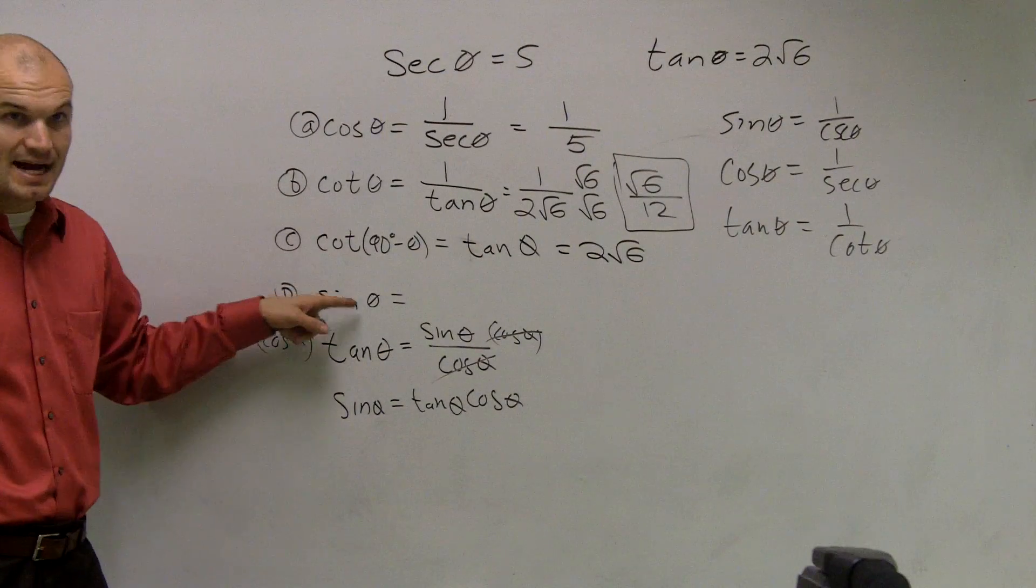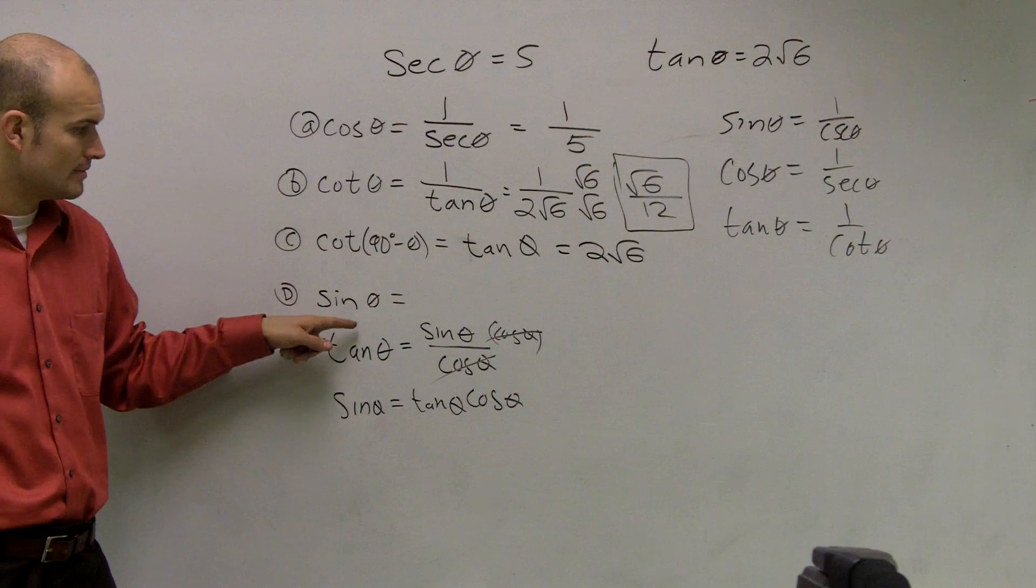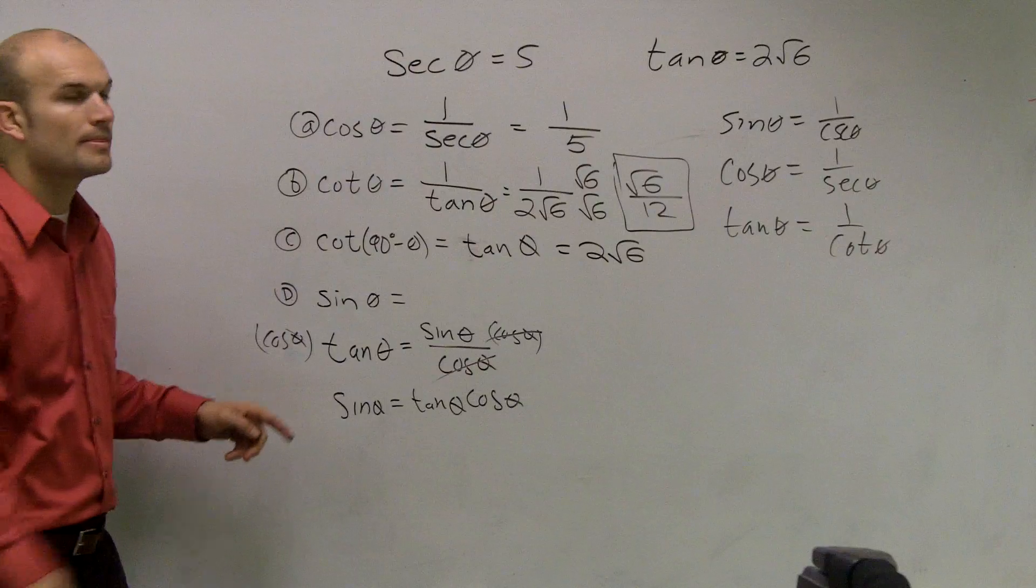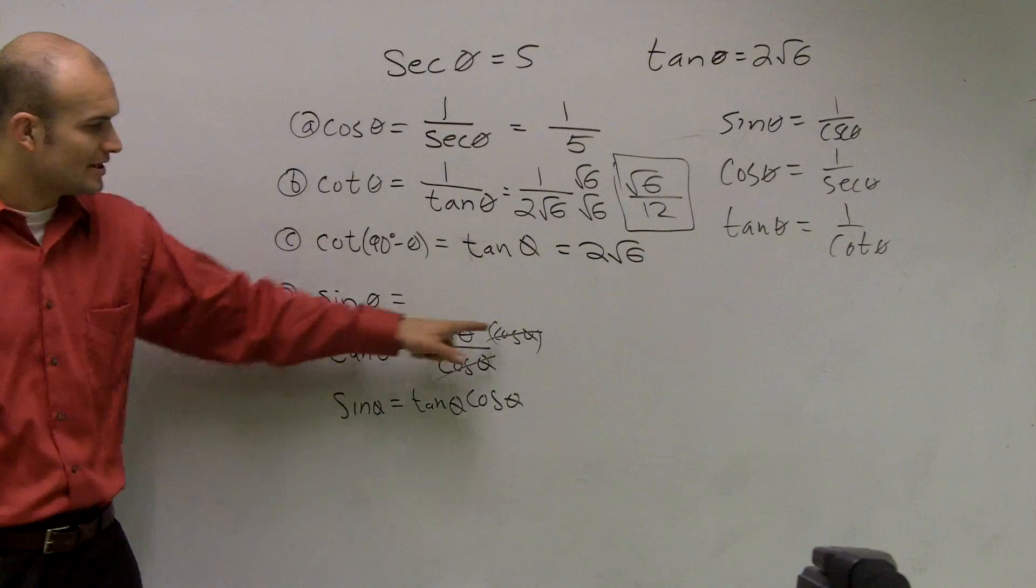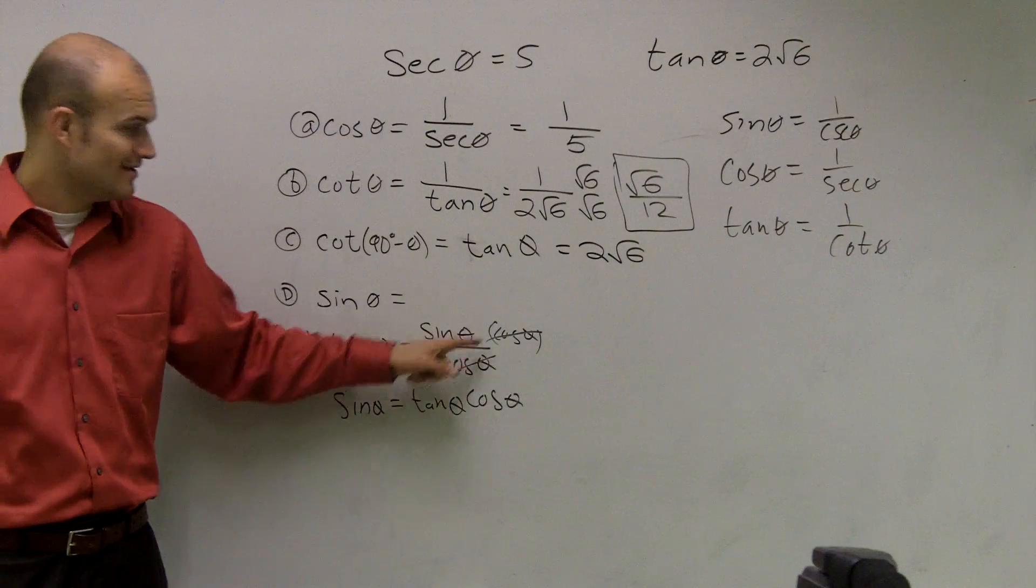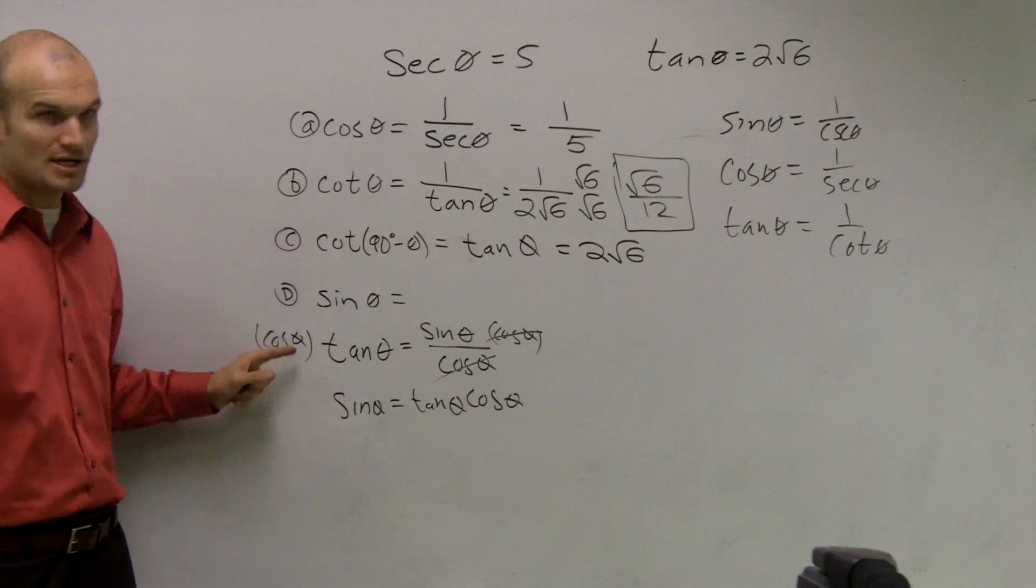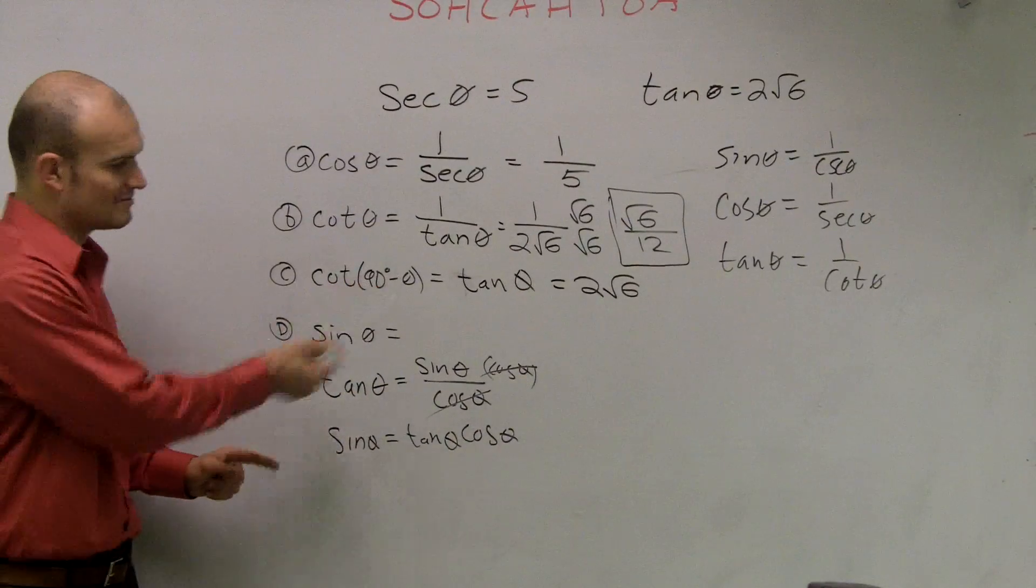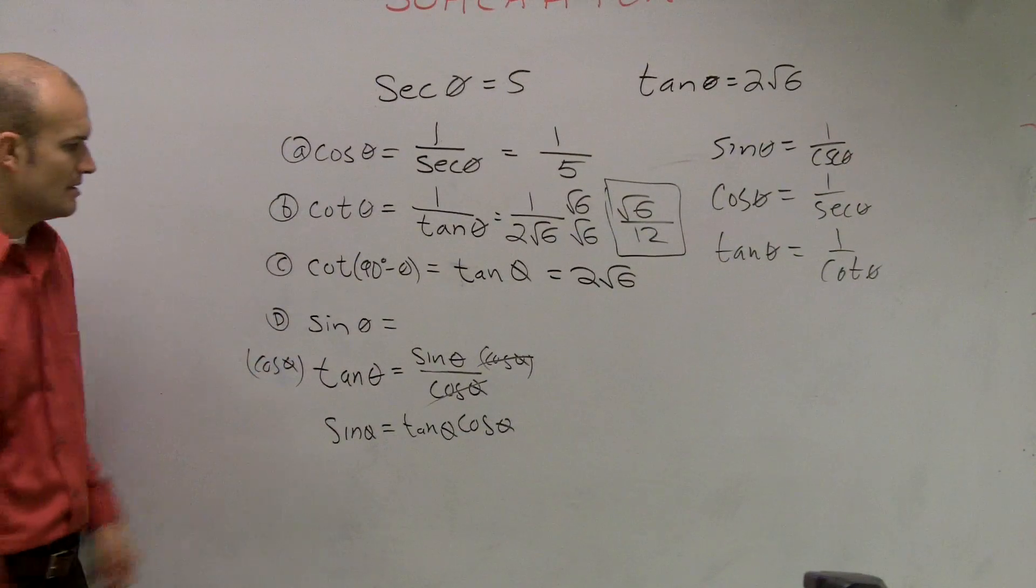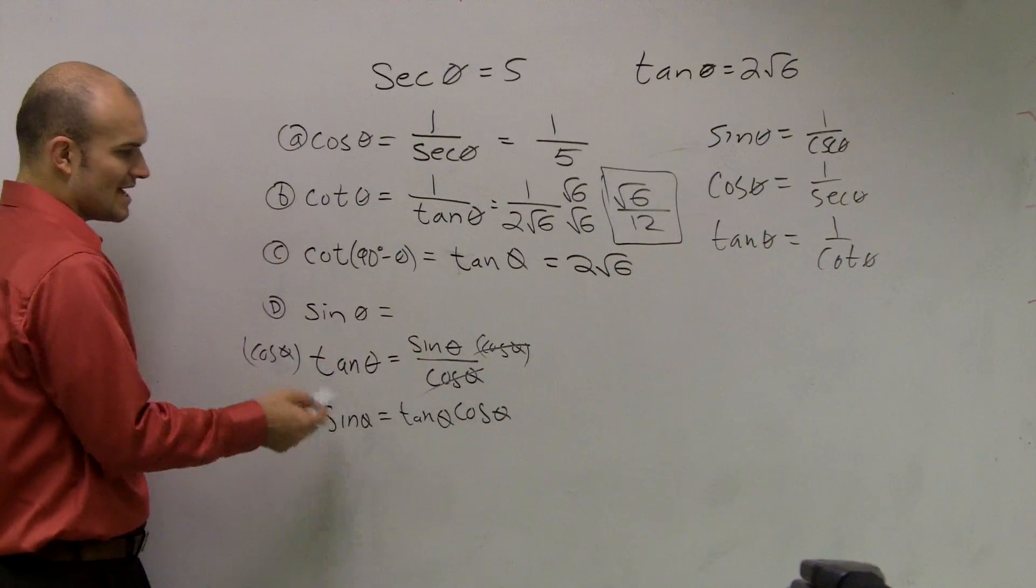Because remember, we want to figure out what sine is, right? It crosses out over here, it doesn't cross over here. It's cosine times tangent. I just got cross out happy. My bad. So therefore, we have sine equals that.